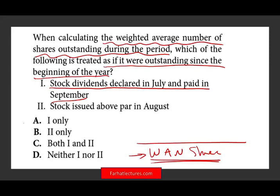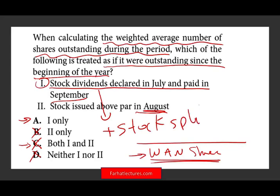Since option one is correct, answer A is a potential candidate; B (two only) can be eliminated. C (both one and two) is still possible. D (neither) can be eliminated. For option two — stock issued above par in August — if stock is issued in August, it is outstanding only as of August, not the beginning of the year. So option two is not true. Stocks are usually issued above par value; if issued in August, they are outstanding as of August only.